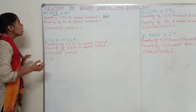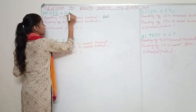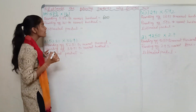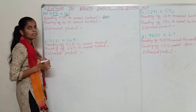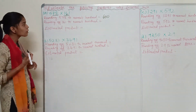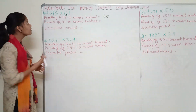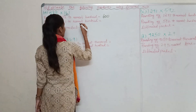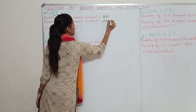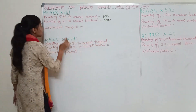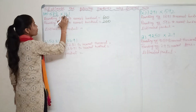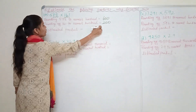Now rounding off 161 to the nearest hundred. Look at the tens place here. The number given is 6, and 6 is also greater than 5, so we will round it off to the nearest hundred. The next hundred after 100 is 200, so we write 200.